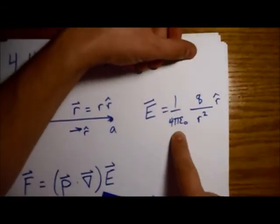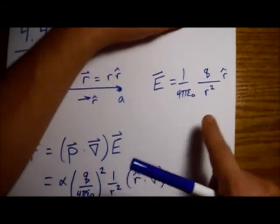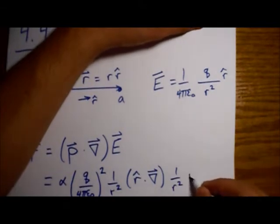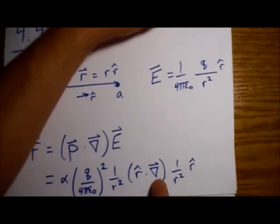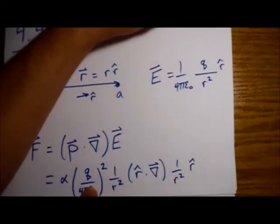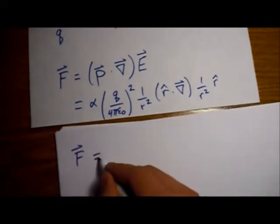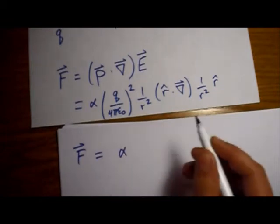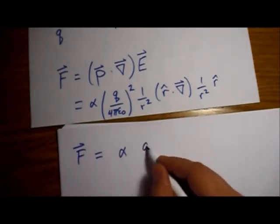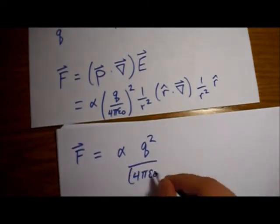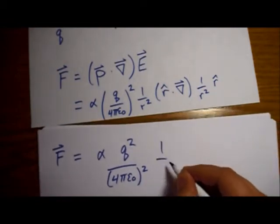So we have r hat dotted with this gradient operator, and then we have this E. Now we've already brought this constant out here and the q, and all we have left is 1 over r squared r hat. We can't bring this r squared out because we can't just move it to the other side of this operator here. This operator is acting on this. So let's go ahead and look at this. We have an alpha, we have a q squared, we have a 4πε₀. I'll put this square down here. We have a 1 over r squared.